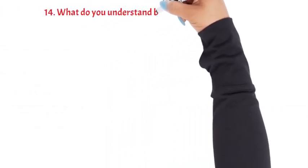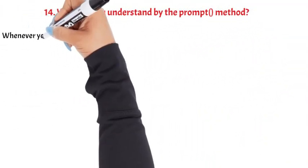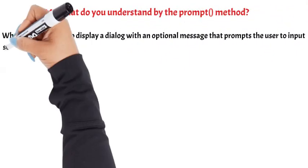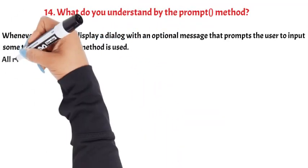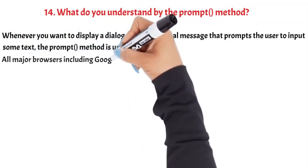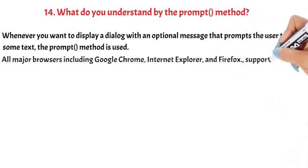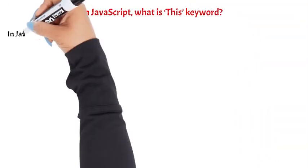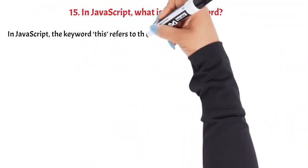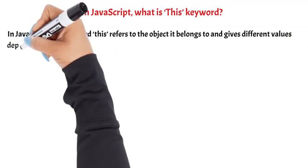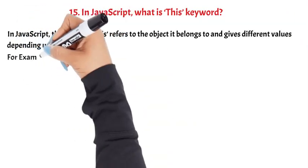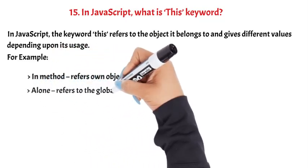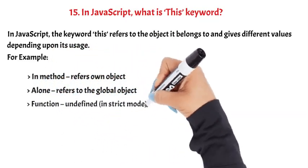Question 14: What do you understand by the prompt method? Whenever you want to display a dialogue with an optional message that prompts the user to input some text, the prompt method is used. All major browsers including Google Chrome, Internet Explorer, and Firefox support this. Question 15: In JavaScript, what is the 'this' keyword? The keyword 'this' refers to the object it belongs to and gives different values depending on its usage — in a method it refers to its own object, used alone it refers to the global object, and in a function in strict mode it is undefined.